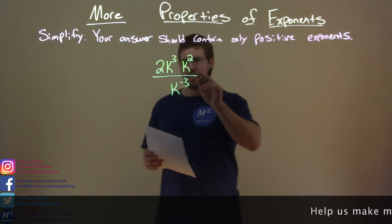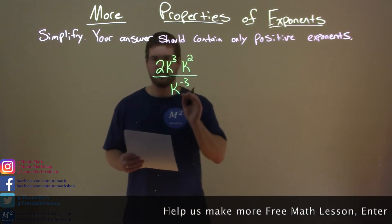2k to the third power, k to the second power, all over k to the negative third power.